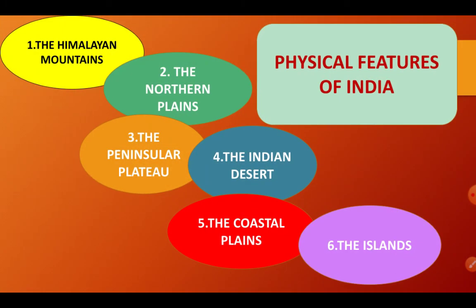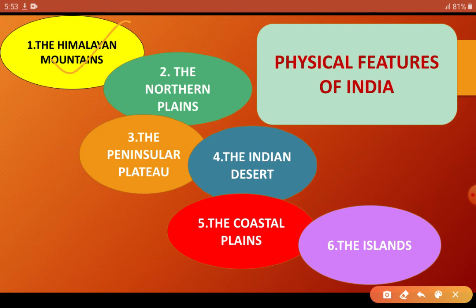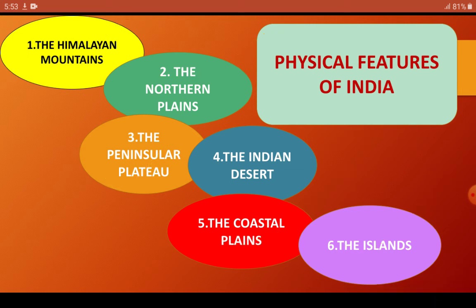Now let's talk about the physical features of India. In India's physical features, we see six categories: Himalayan mountains, northern plains, peninsular plateau, Indian desert, coastal plains, and the islands. We will study them together, but in today's worksheet we discuss only about the Himalayas.